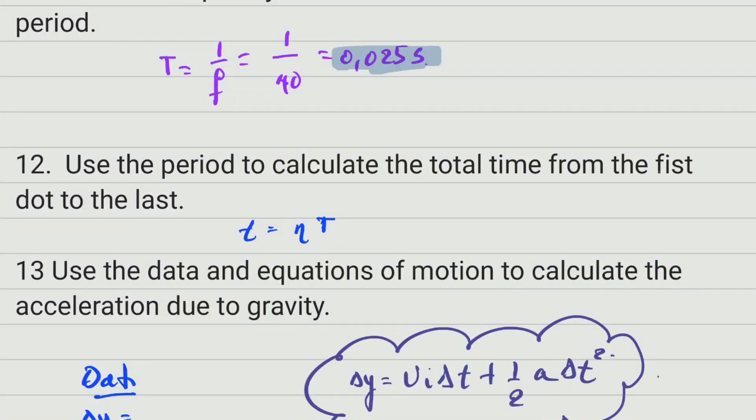If we have 14 intervals, we come to this formula we spoke before, and multiply 14 by the period which is 0.025.